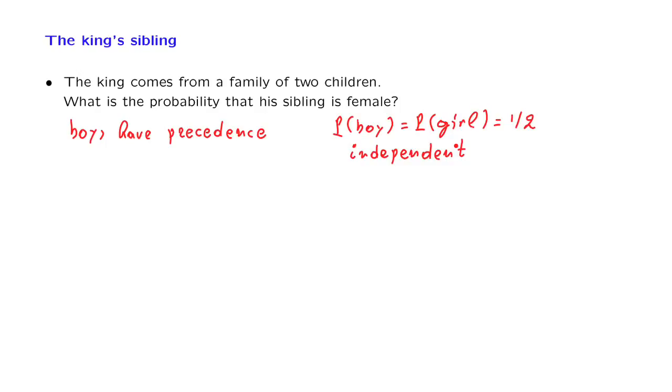Given these assumptions, perhaps we can argue as follows. The king's sibling is a child which is independent from the king, its gender is independent from the king's gender. So it's going to be a girl with probability 1 half.